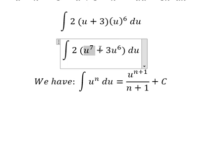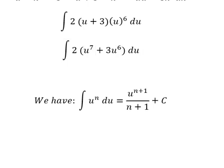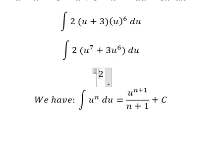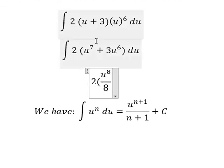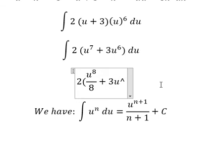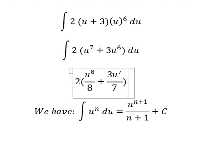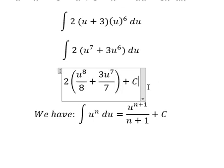We apply the formula to each term. For the first term, the exponent 7 plus 1 gives us 8, so we get u to the power of 8 over 8. The next term gives us u to the power of 7 over 7, plus C.